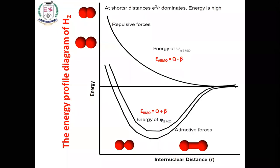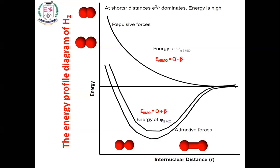The x-axis is internuclear distance. At the start, the internuclear distance is very small, and repulsive forces are high. As the distance increases, at one stage the energy of psi BMO equals q + beta — the bonding molecular orbital energy. The energy comes down due to attraction up to a certain distance; after that, repulsion increases again if the atoms come too close. The repulsive curve decreases until it reaches zero at large distances. This is the energy profile diagram of hydrogen.